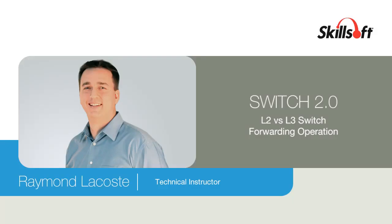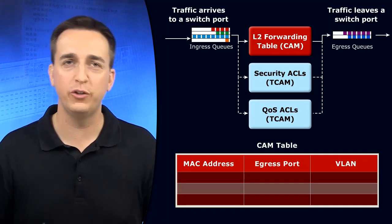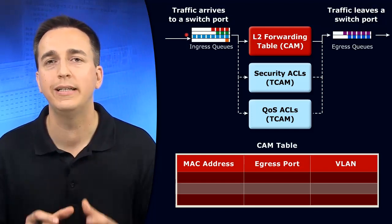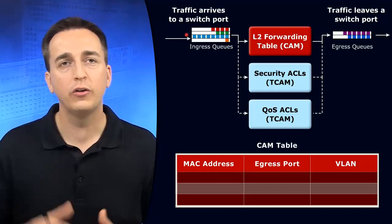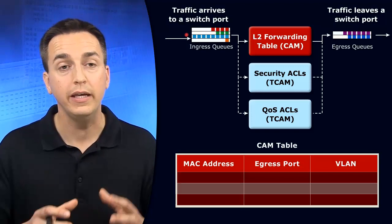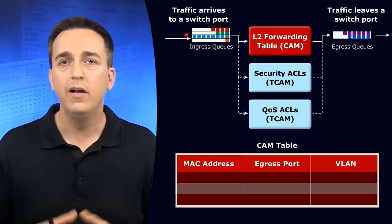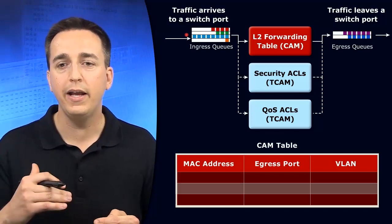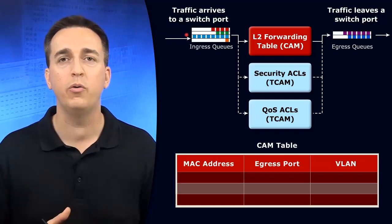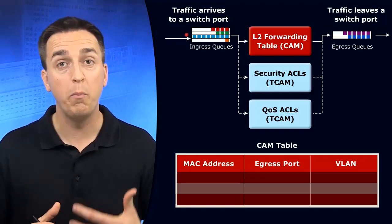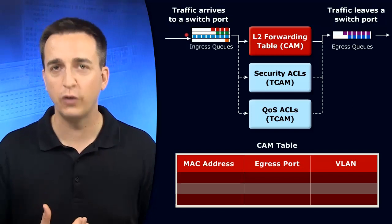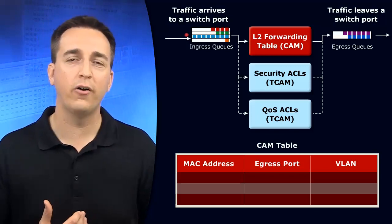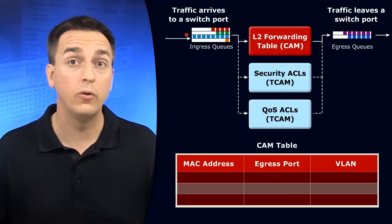Let's examine what happens when traffic arrives on a switch port. Traffic arrives and it's placed into an ingress queue. There are multiple ingress queues on our Catalyst switches, and these ingress queues can have different priorities. Therefore, we can place more important traffic in a queue with a higher priority than less important traffic, and as a result, that important traffic gets processed first. So voice traffic would go in a higher priority queue than regular data traffic going out to the internet.